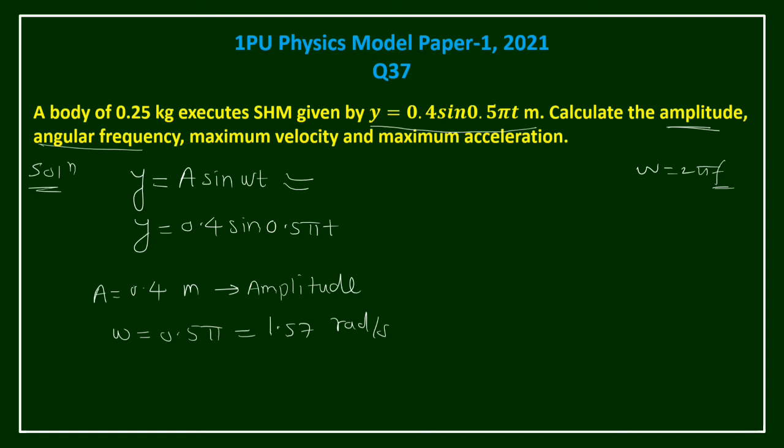Now maximum velocity. Maximum velocity of SHM can be given by the formula omega times amplitude. So this is equal to - in the derivation part we have derived all this formula right - so omega we have already calculated 0.5π, and A is 0.4.